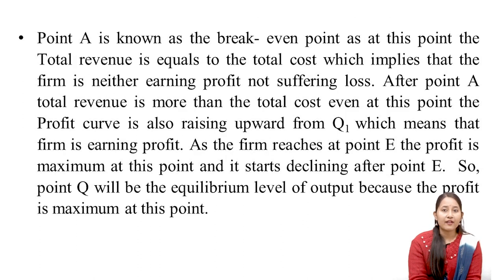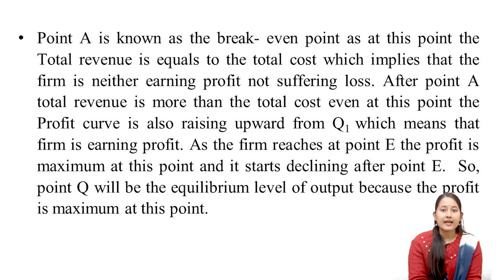Point A is known as the break-even point — break-even means no profit, no loss. At this point, total revenue is equal to total cost, which implies the firm is neither earning profit nor suffering a loss. After point A, total revenue is more than total cost, and the profit curve rises upward from Q1, meaning the firm is earning profit. As the firm reaches point E, profit is maximum and starts declining after point E. So point Q will be the equilibrium level of output because profit is maximum at this point.